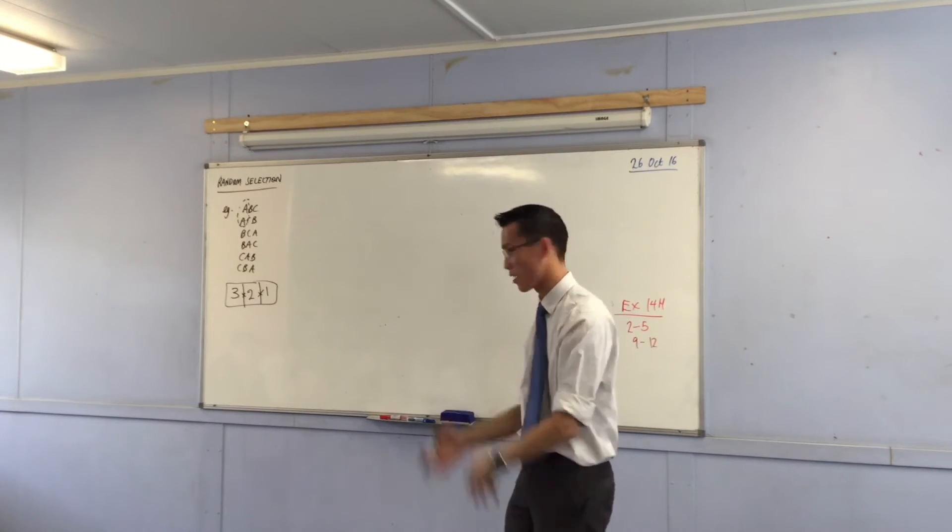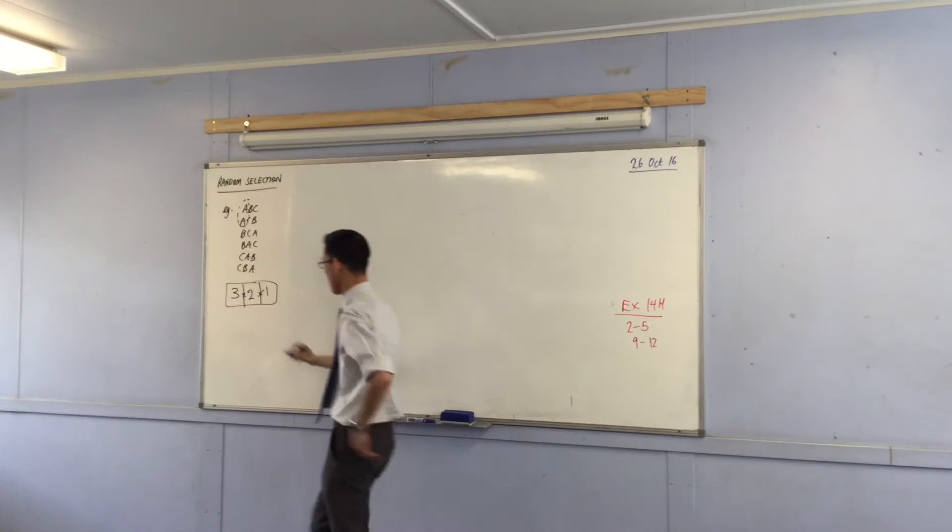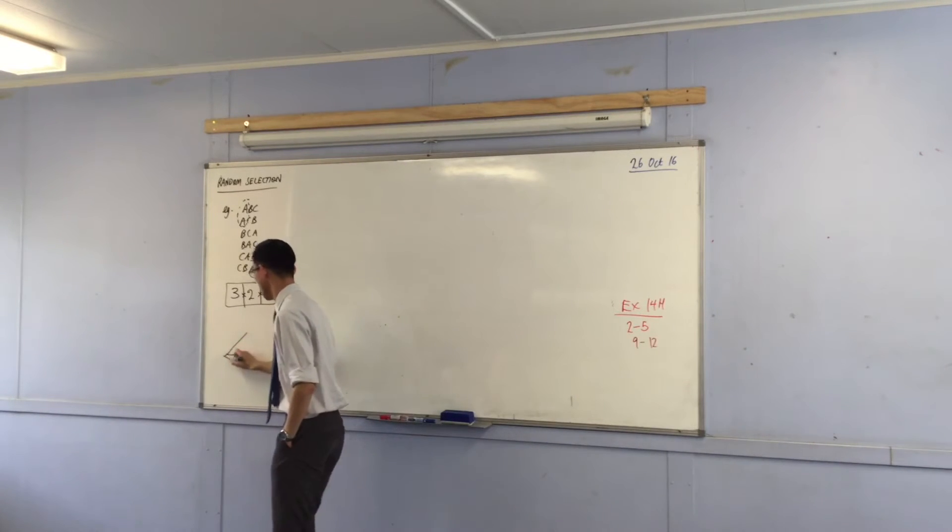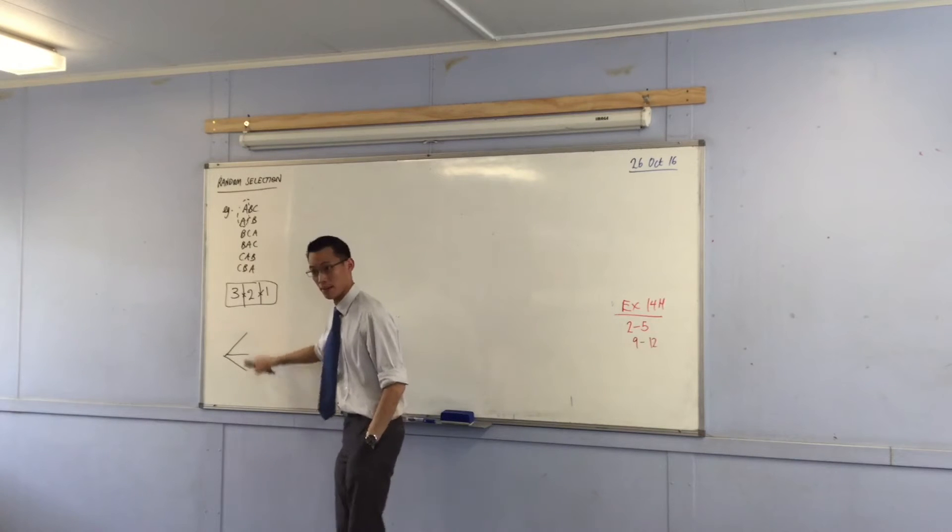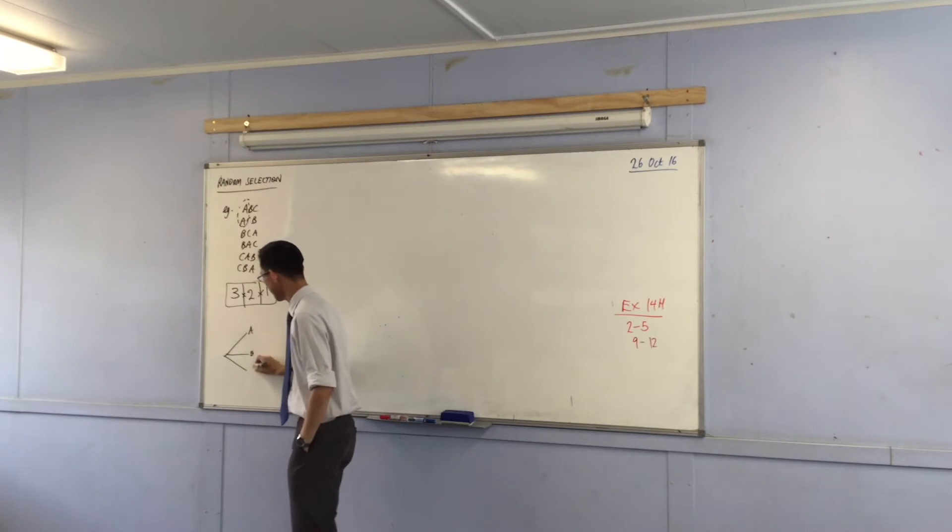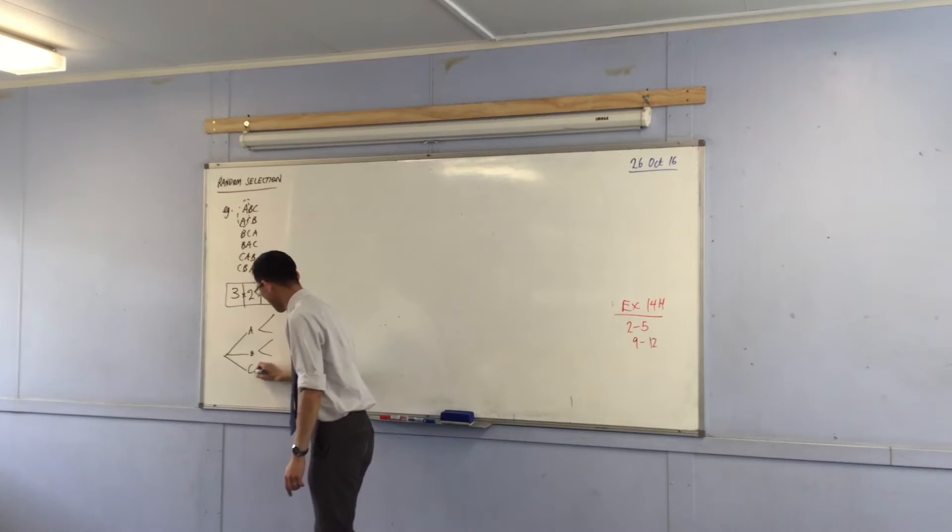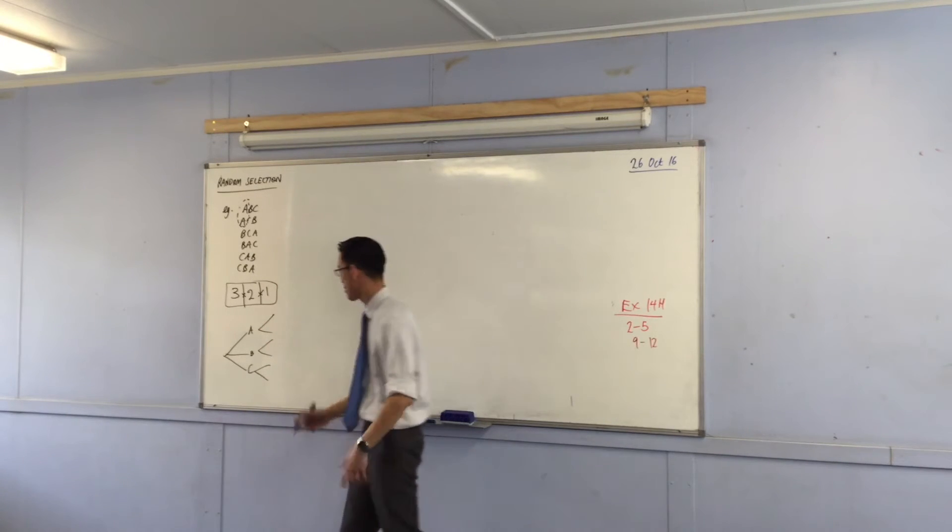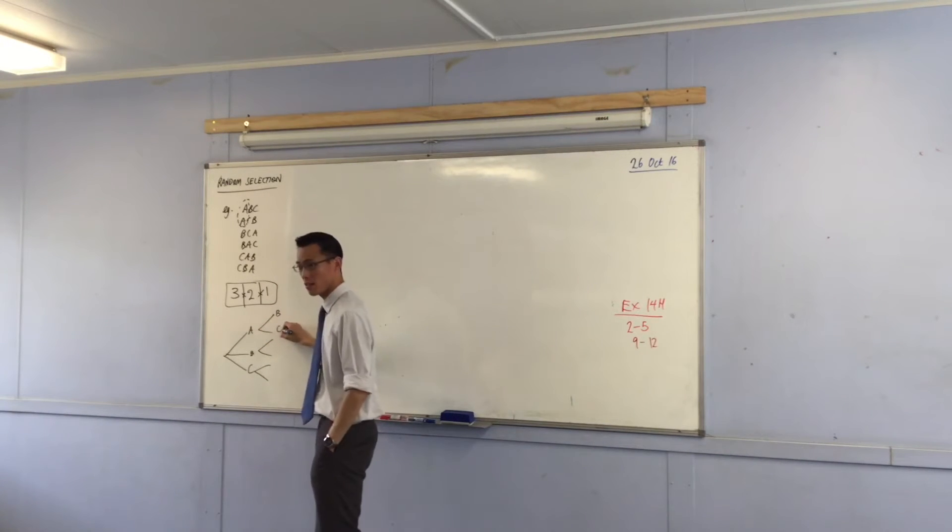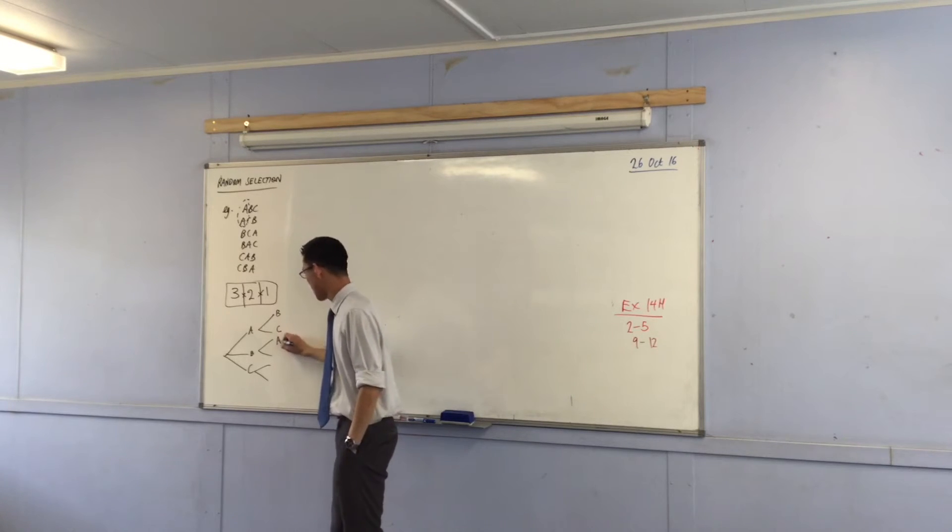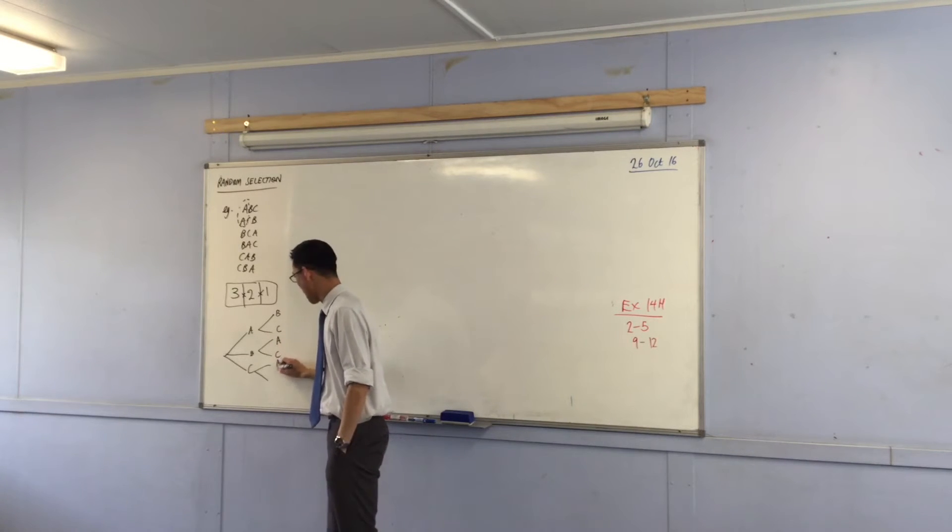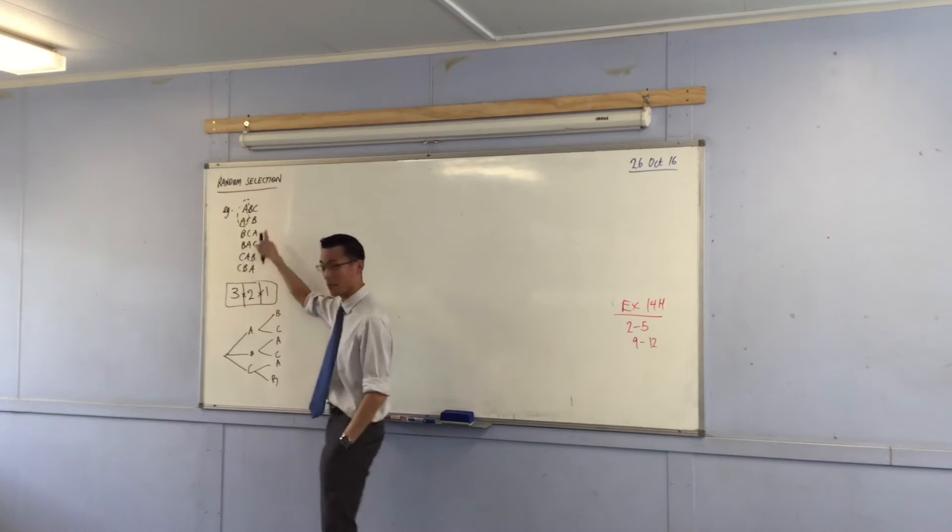Do you remember the probability trees we did like a couple of weeks ago? You're going to have, another way of drawing this is, one, two, three, there's your first song, A, B, and C. Then after that, it branches off again. For the two choices that you have remaining. Here it'd be B and C. Here it'd be A and C. And then lastly, A and B. In fact, you can see these choices up here in my list.